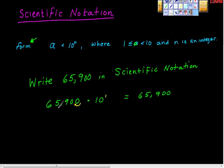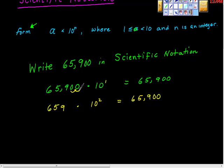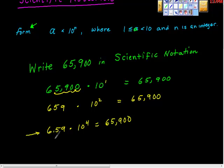But 6,590 is still not greater than 1 but less than 10, so we move it again. Now we'd write 659 times 10 to the second power, and believe it or not, it still equals 65,900. At some point I'm going to move this thing over — once, twice, three times, four times — and we're going to get 6.59 times 10 to the fourth, which has to still equal the number we started with. And I think that will be in scientific notation.